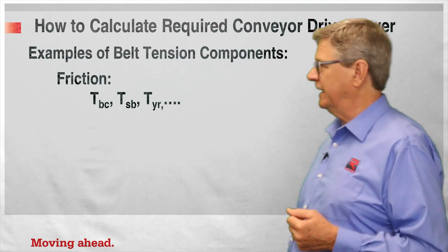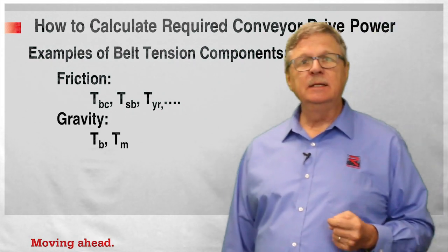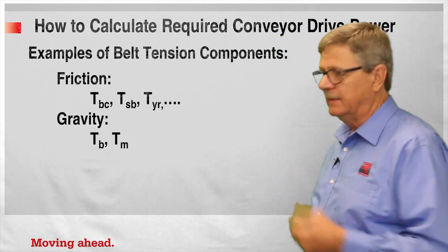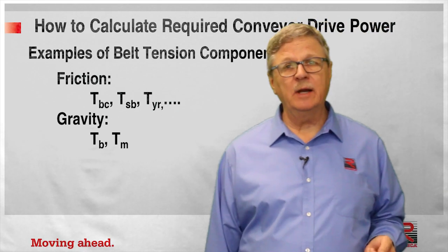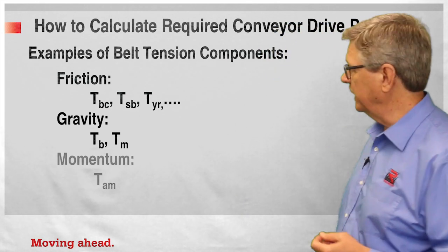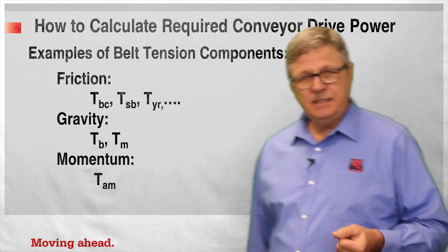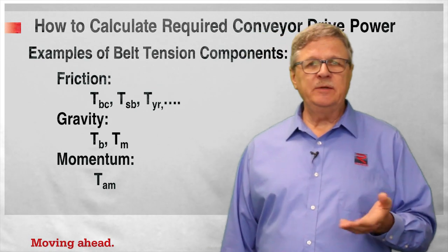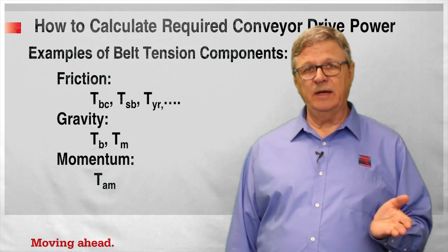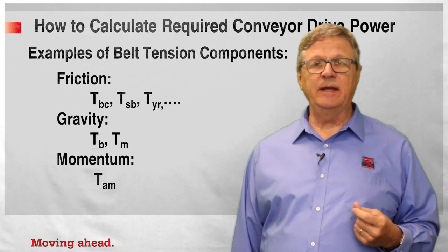The gravity components include TB, the tension required to lift or lower the conveyor belt, and TM, the tension required to lift or lower material. The momentum component is TAM — the tension required to accelerate the material on the belt from its initial velocity as it hits the conveyor to the terminal velocity, which is defined as the conveyor belt speed.